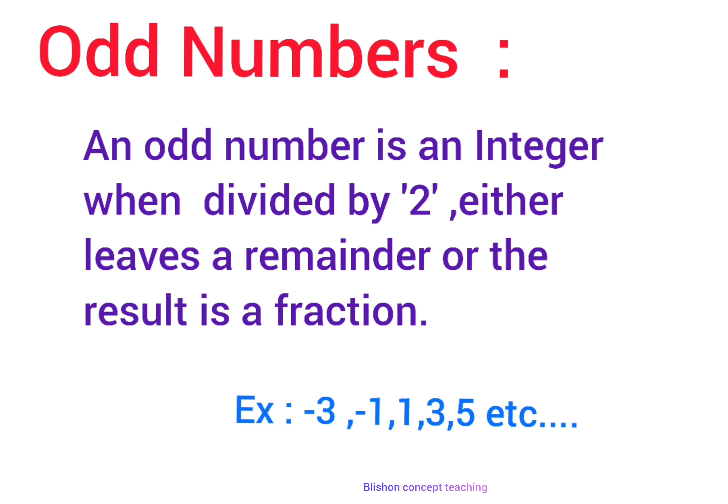Definition of Odd Numbers: An odd number is an integer when divided by 2 either leaves a remainder or the result is a fraction. Examples include minus 3, minus 1, 1, 3, 5, etc.